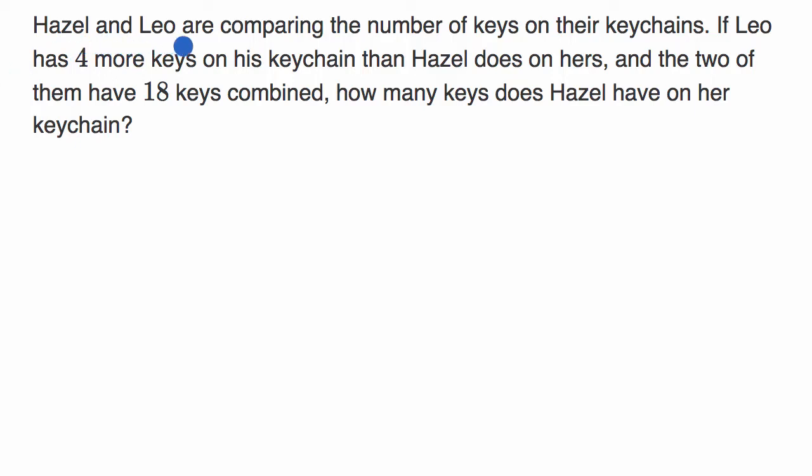We're told that Hazel and Leo are comparing the number of keys on their key chains. If Leo has four more keys on his key chain than Hazel does on hers, and the two of them have 18 keys combined, how many keys does Hazel have on her key chain? Pause this video and see if you can figure that out.